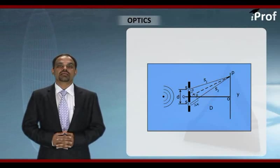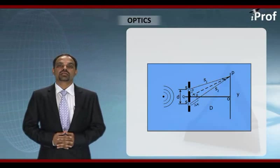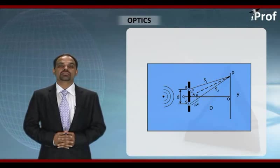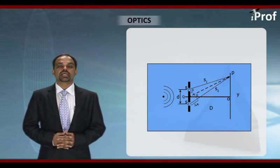As we have discussed earlier, this method uses division of wavefront to obtain two coherent sources. Here S1 and S2 are at same distance, placed symmetrically with respect to monochromatic source. So there will be no phase difference. That is S S1 is equal to S S2. So S1 and S2 will be part of same wavefront.